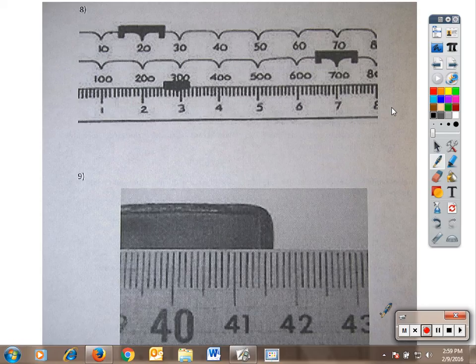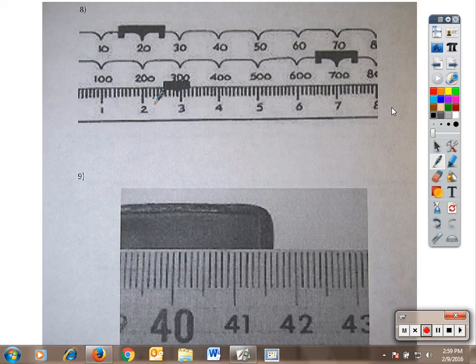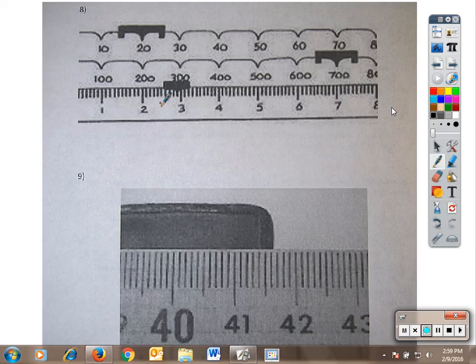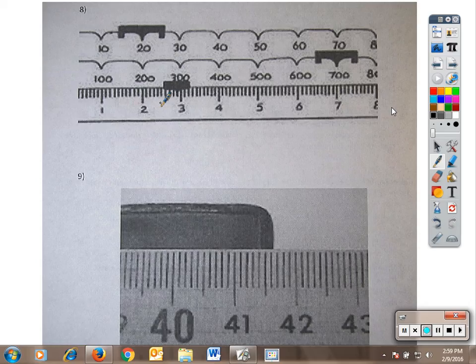Triple beam balances, each of these little lines are tenths. This is 2, that's 2.1, 2.2, 2.3, 2.4, 2.5 and so on. Because the balance reads down to the tenth place, the rule is your measurement has to go all the way to the hundredth place. One place value further than the smallest marking.